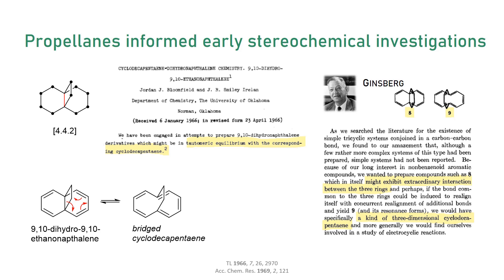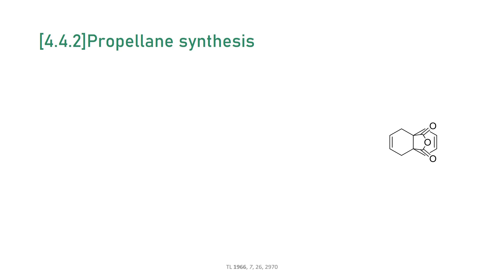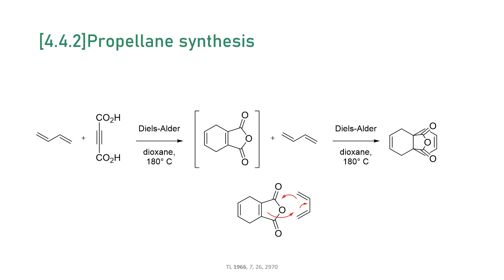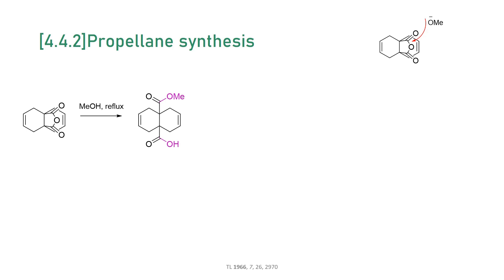The starting material for the synthesis was a known anhydride, which was prepared via a clever one-pot sequence: a first Diels-Alder reaction with 1,3-butadiene and an alkyne dienophile, then an intramolecular condensation, and finally a second Diels-Alder reaction. This anhydride is not really a propellane because the three rings are not exclusively carbon-based. Their actual route started with cleavage of the anhydride with methanol, and in two steps the carboxylic acid was also converted to the methyl ester via chlorination.